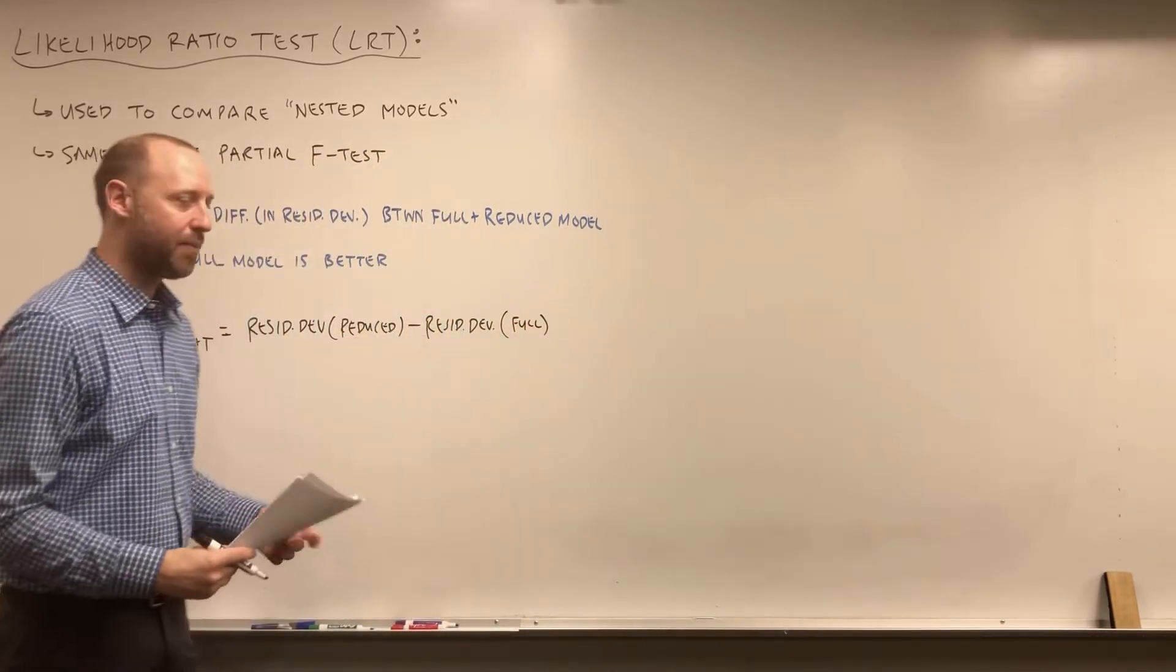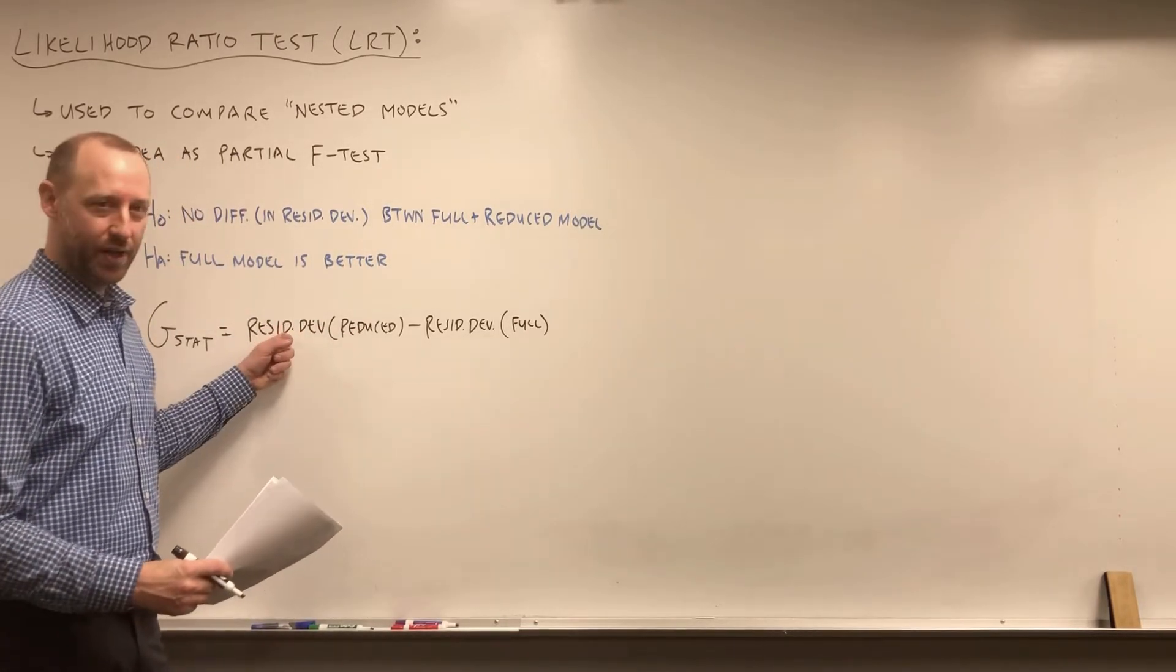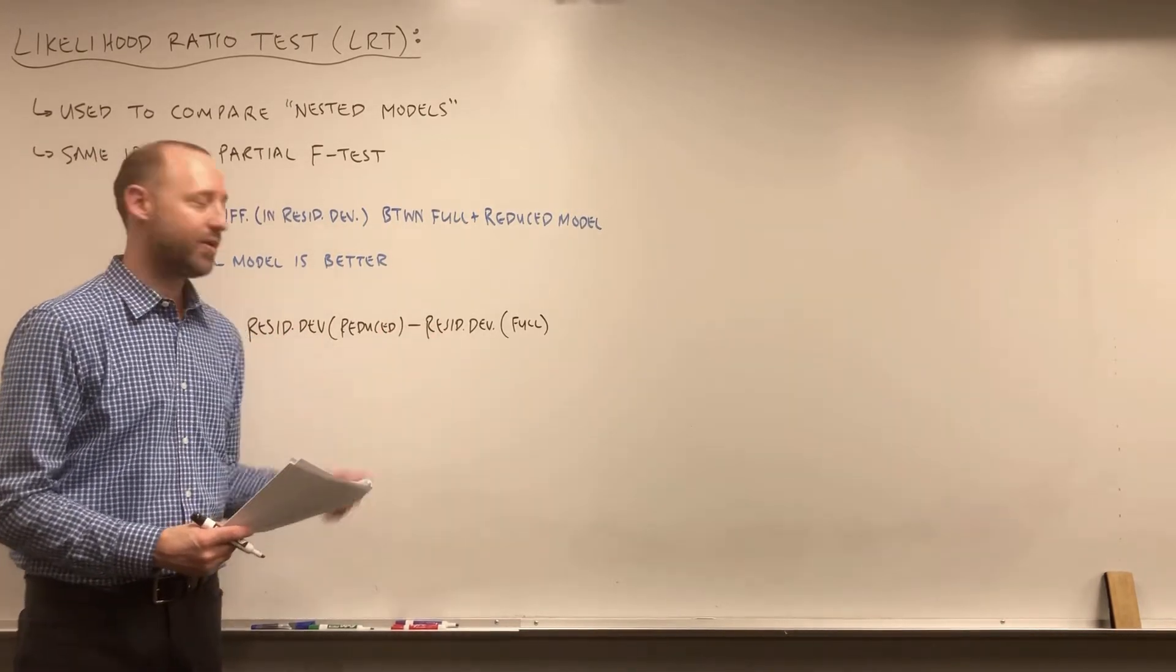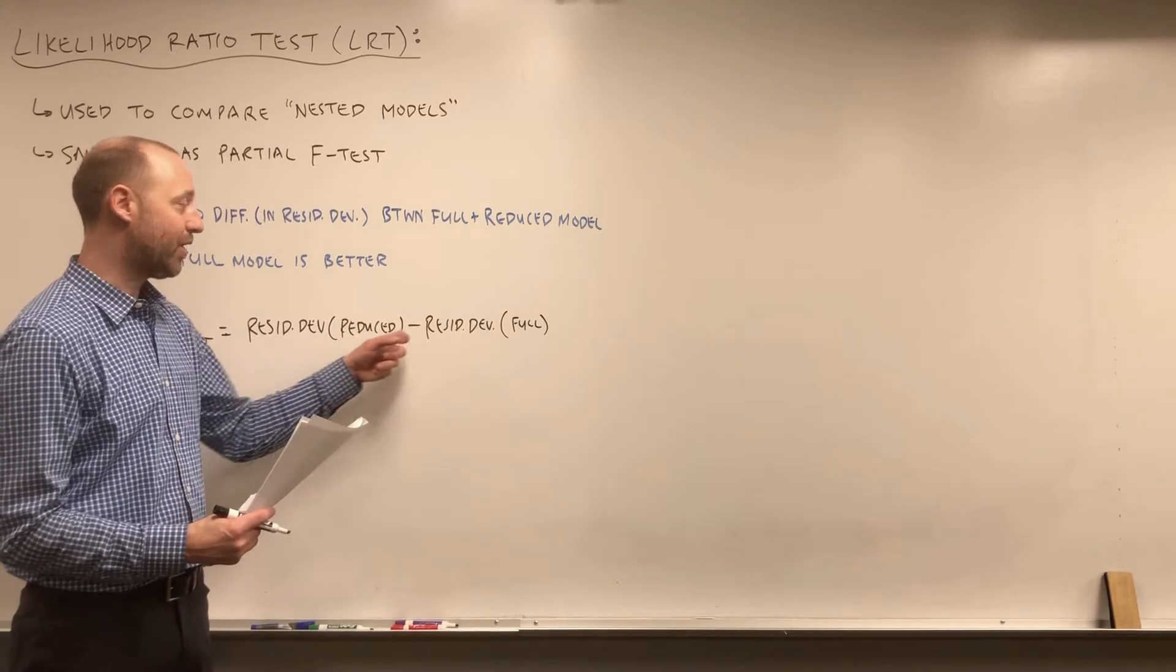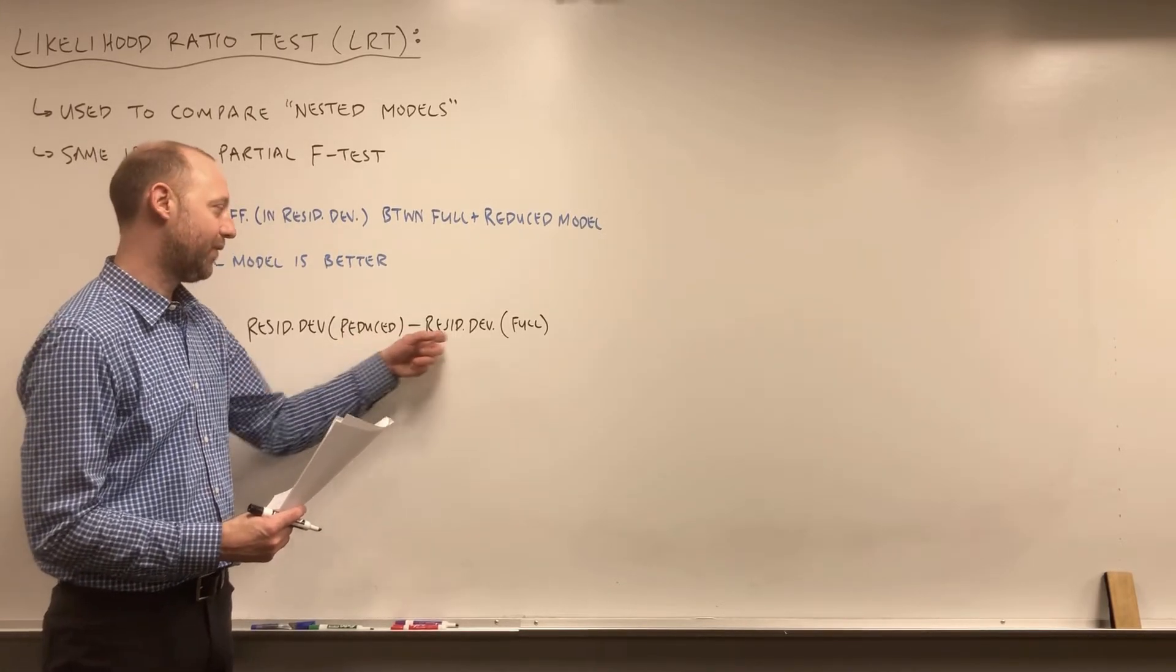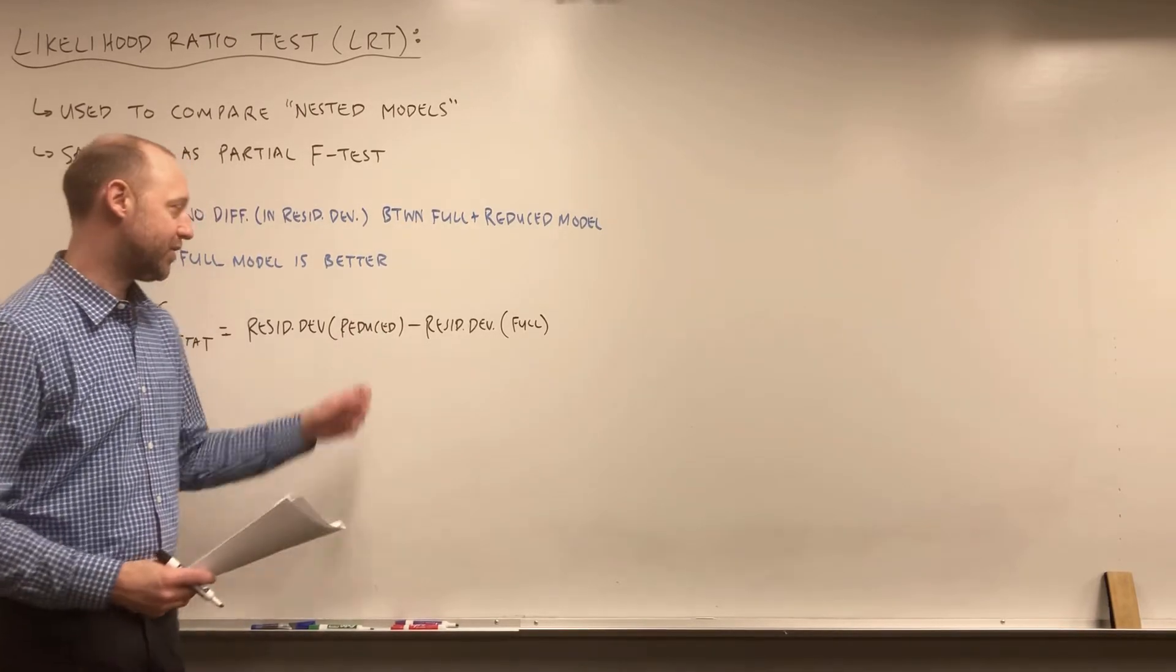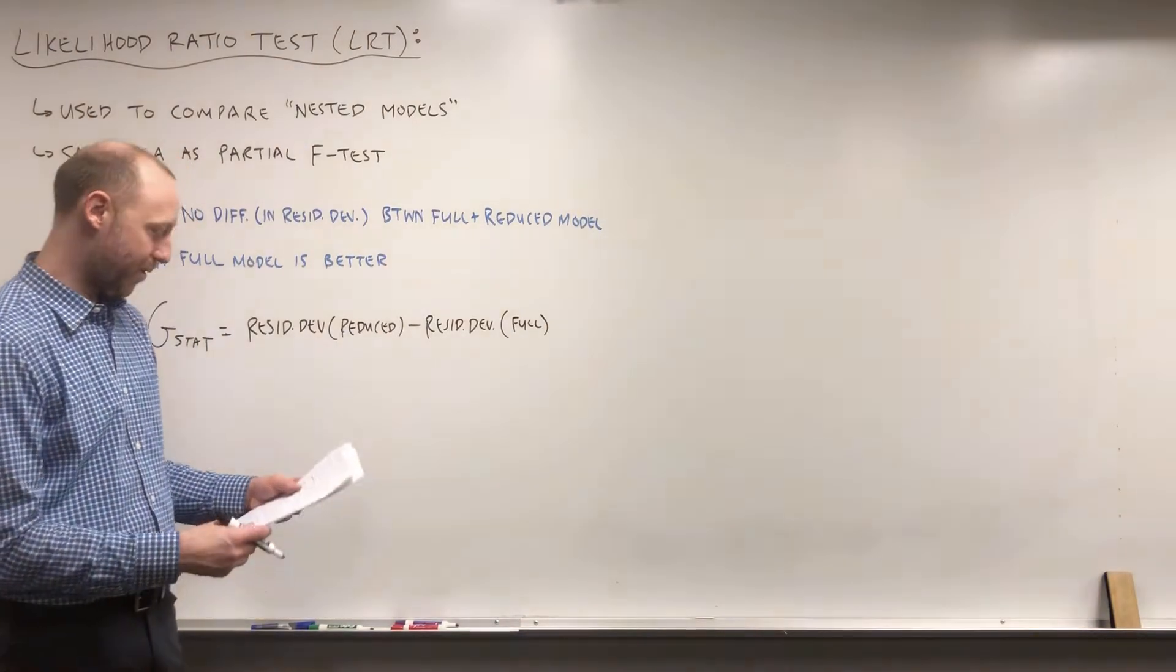If you remember, the partial F-test compared the sum of squared errors or the residual sum of squares for the reduced and full model. There, we took the ratio rather than the difference. Here, we're working on the scale of logs, so taking the difference in logs is the log of the ratio. Conceptually, it's very similar to what the partial F-test was doing.